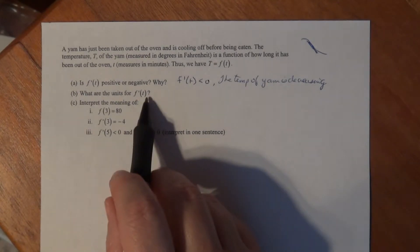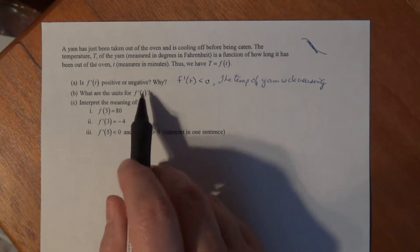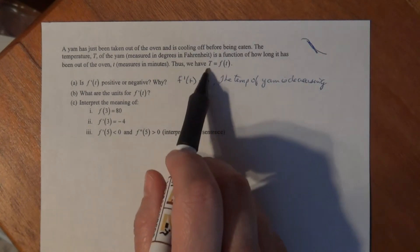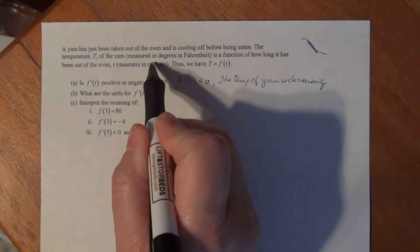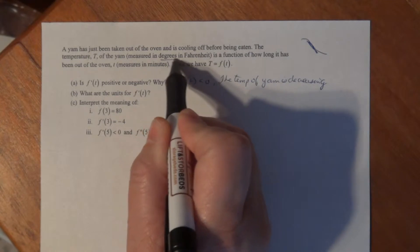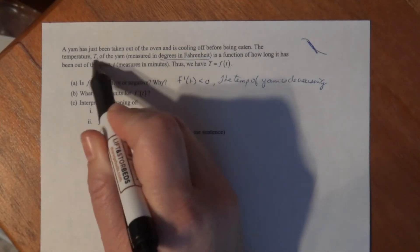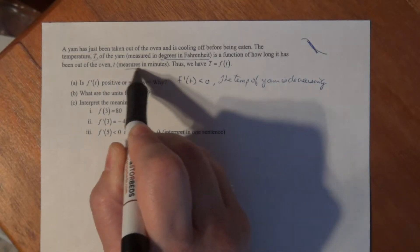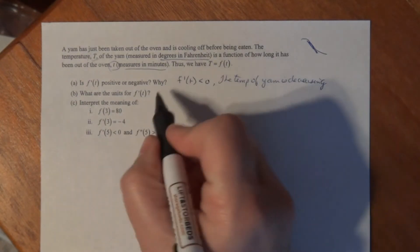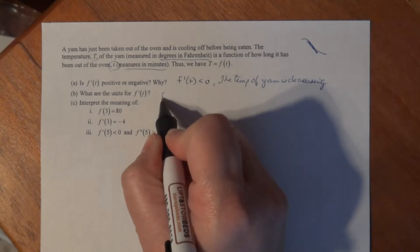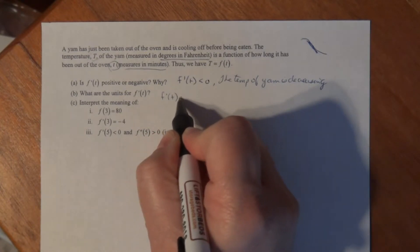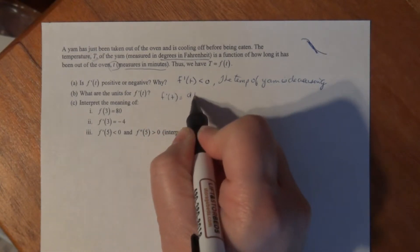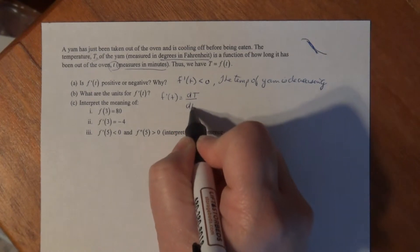What are the units for F prime of t? We have to take into consideration the units of T and F of t. F of t is in degrees Fahrenheit, capital T for temperature. Time is measured in minutes, lowercase t. You can always think of F prime of t as a small change in output over a small change in input.